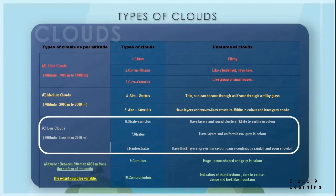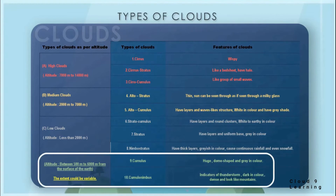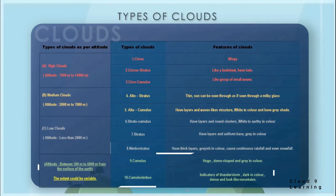Low clouds have an altitude of less than 2,000 meters. The types of low clouds are stratocumulus, stratus and nimbostratus. Stratocumulus have layered and round clusters; they are white to earthy in color. Stratus have layers with a uniform base and are gray in color. Nimbostratus have thick gray layers and cause continuous rainfall and even snowfall. There are also two clouds with variable altitude, formed between 500 to 6,000 meters: cumulus and cumulonimbus. Cumulus clouds are huge, dome-shaped and gray, while cumulonimbus are indicators of thunderstorms, dark, dense and look like mountains.